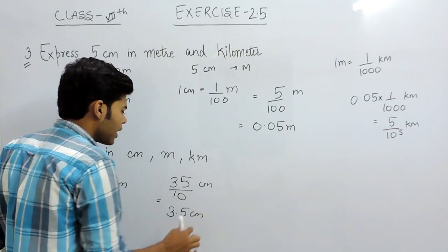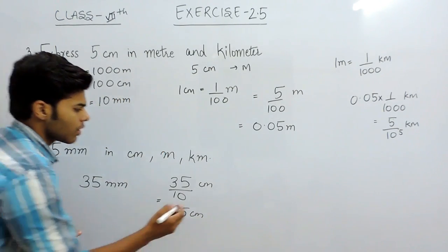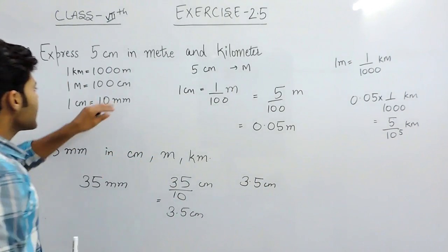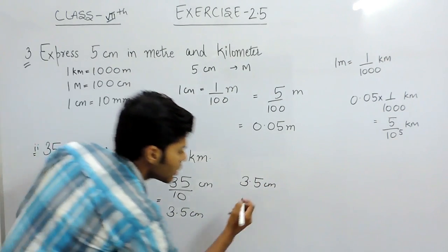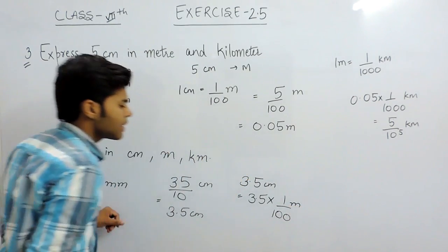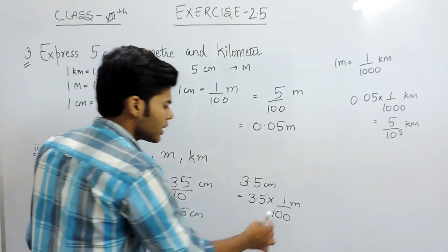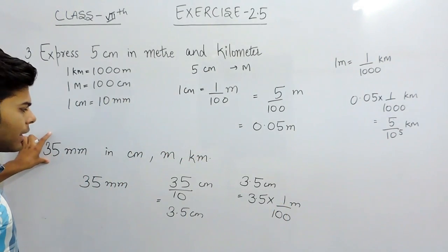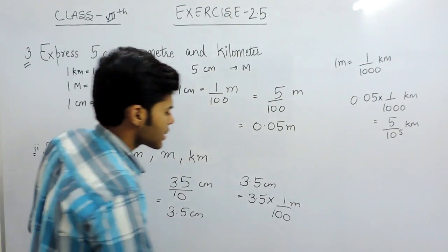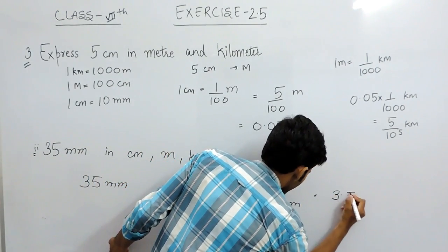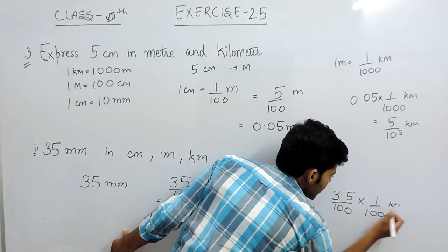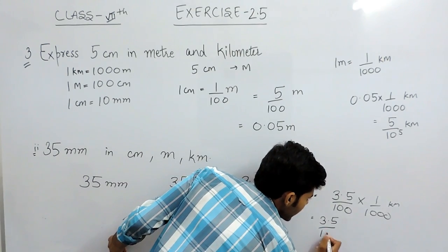Now this centimeter can be converted in meter. 3.5 centimeter is given to us and we know that when we have to convert it in meter then 1 centimeter will be equal to 1 upon 100 meter. So that will be 3.5 multiplied by 1 upon 100 meter, and this is the answer in meters. Now, 35 millimeter is equal to 3.5 centimeter is equal to 3.5 upon 100 meter, and now we have to convert it in kilometers. So it will be 3.5 upon 100 multiplied by 1 upon 1000 kilometer, and it will be 3.5 upon 10 to the power 6.